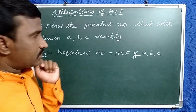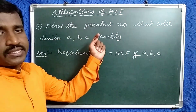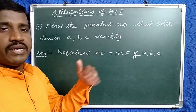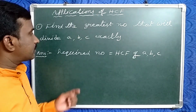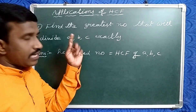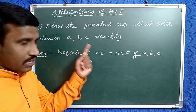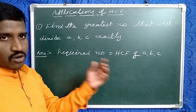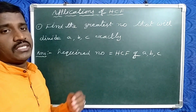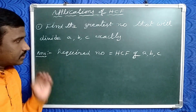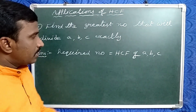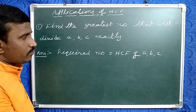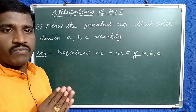Now, the first model in the applications of HCF: find the greatest number that will divide A, B, C exactly. That will divide means the required number divides A, B, C exactly. In this case, you have to find the HCF of the given numbers — that is the required answer. So the required answer will be HCF of the given numbers. This is the first model.